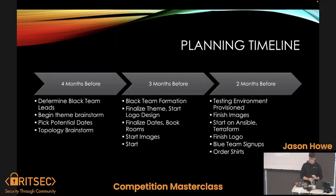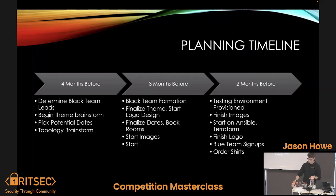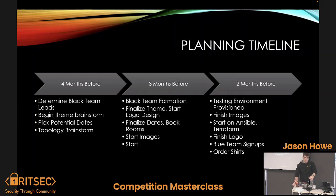About three months before the competition, you finalize the black team, pick your theme, start working on a logo with an outside company, finalize your dates and book your rooms, shop for images, and start general black team development. About two months before, you want a good testing environment provisioned, your images done and tested, then start working on Terraform and Ansible, finalize your logo, get blue team signups out, and order your shirts.